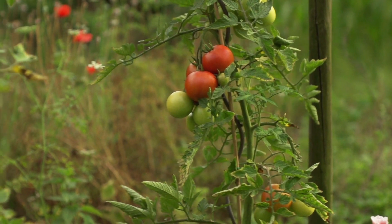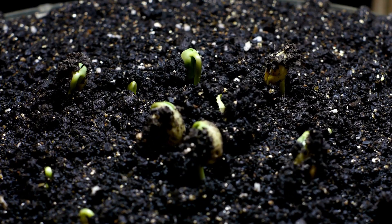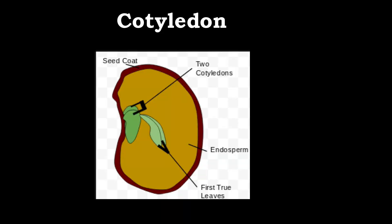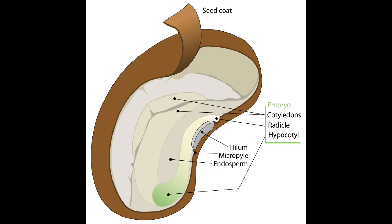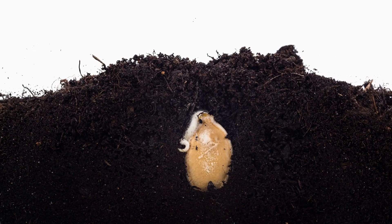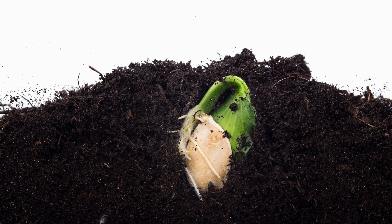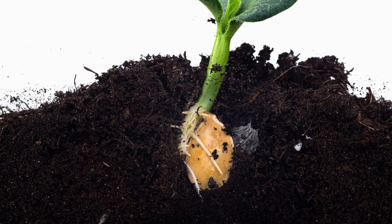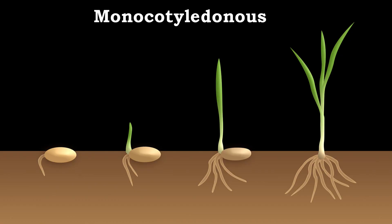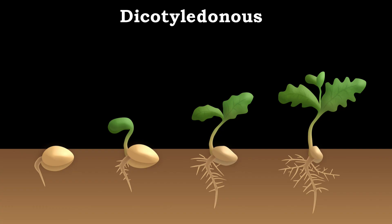Flowering plants are classified into two types based on their seed leaf, which is called a cotyledon. A cotyledon or seed leaf is a significant part of an embryo within the seed of a plant and is described as the embryonic leaf in seed-bearing plants, one or more of which are the first to appear from a germinating seed. Plant species with only one cotyledon are known as monocotyledonous plants, or alternatively monocots, while plants with two embryonic leaves are known as dicotyledonous plants, or alternatively dicots.